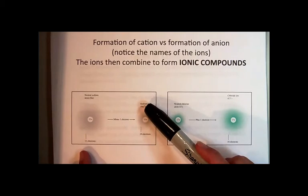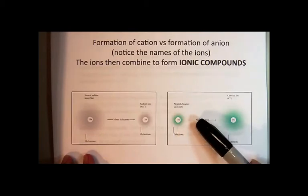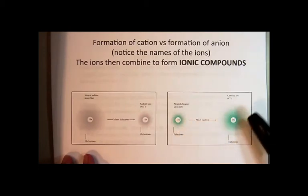the overall ion is going to have a plus one charge. And so you end up with something that's positively charged called a sodium ion. For a chlorine atom, it normally has 17 protons and 17 electrons. What happens when the ion is formed is that the chlorine picks up one electron to form what's called the chloride ion,